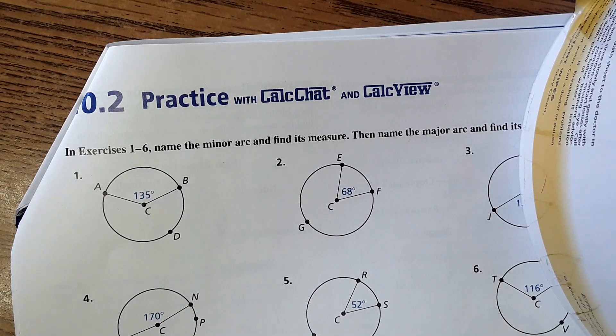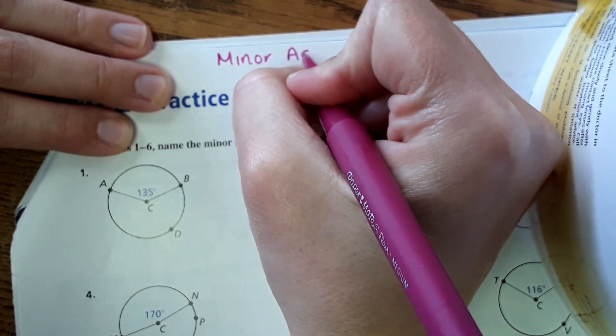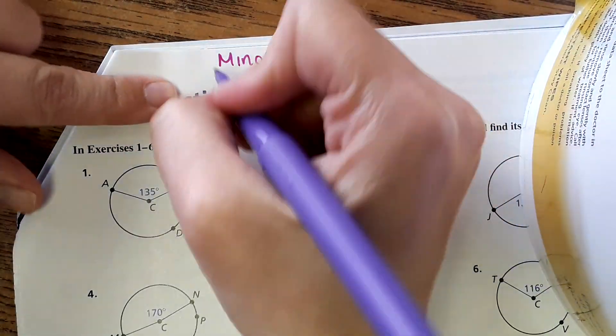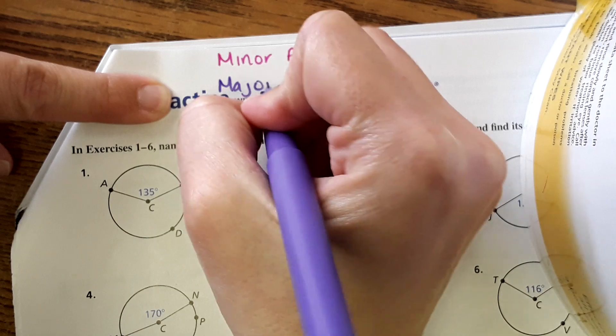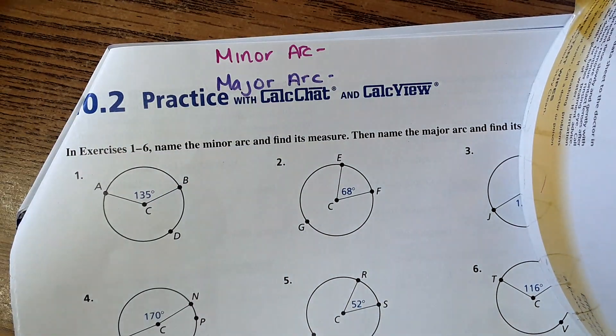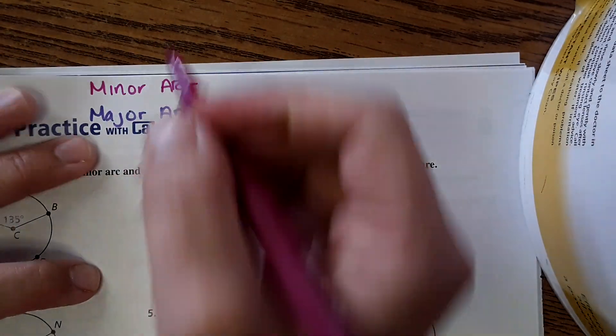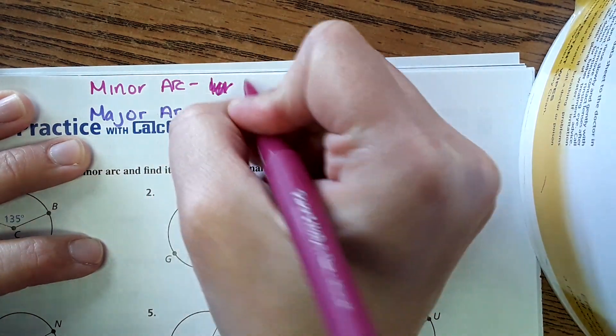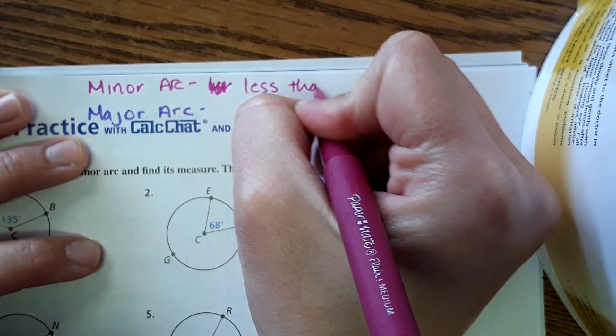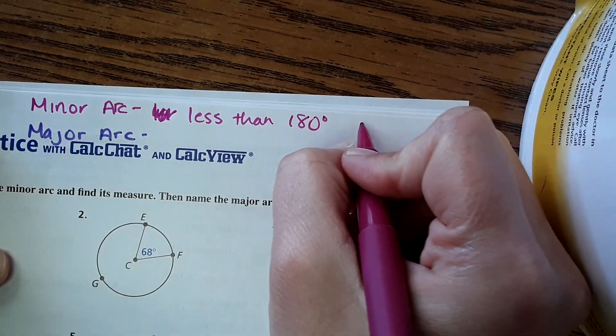Okay, so as you know we always start off with either a little bit of vocabulary or key concepts. The thing I need you to write on the top of your paper is minor arc and major arc. So a minor arc is less than 180 degrees. So on this circle right here the minor arc would be from here to here.